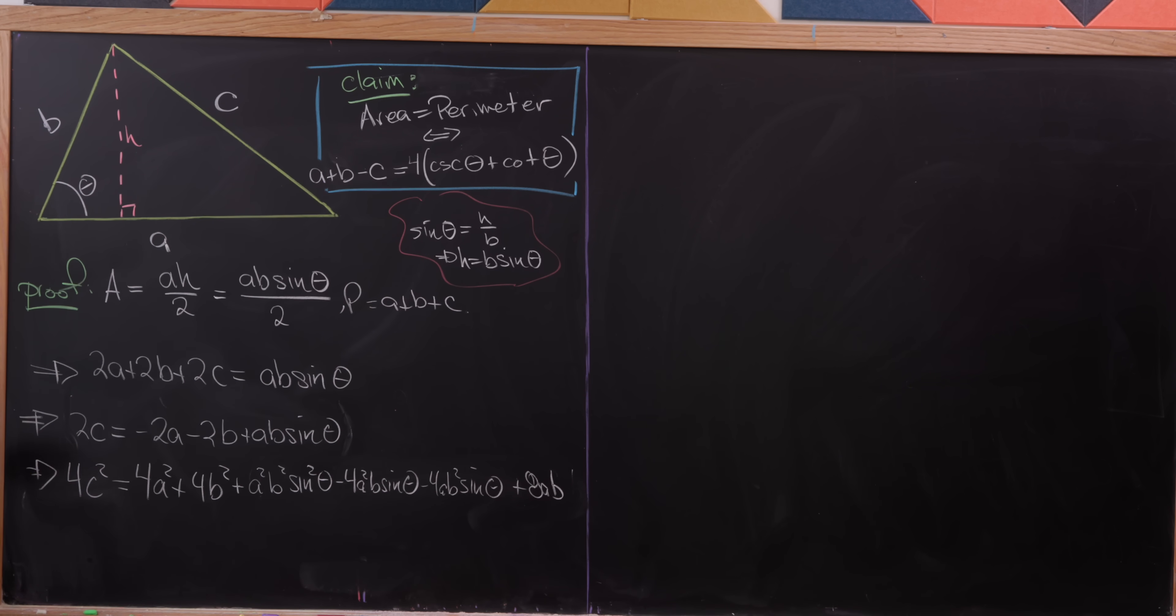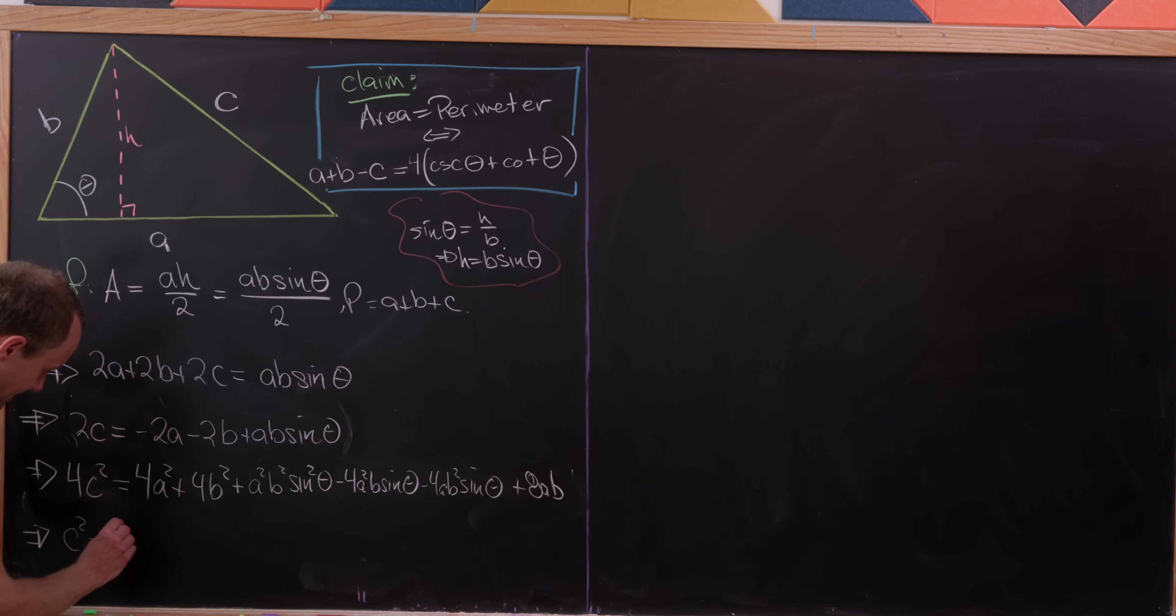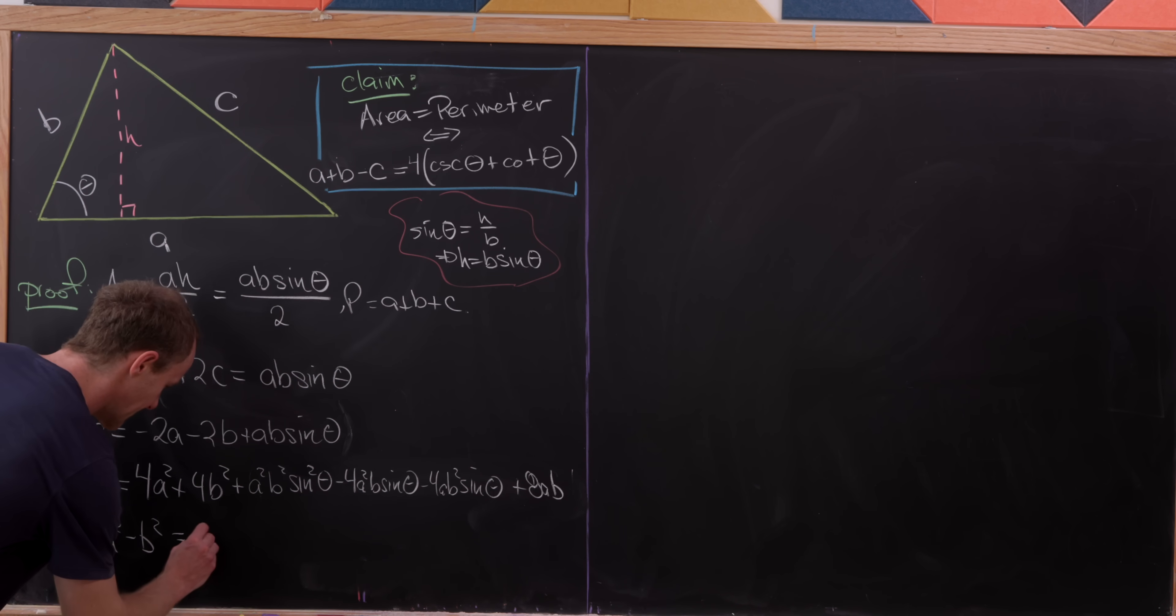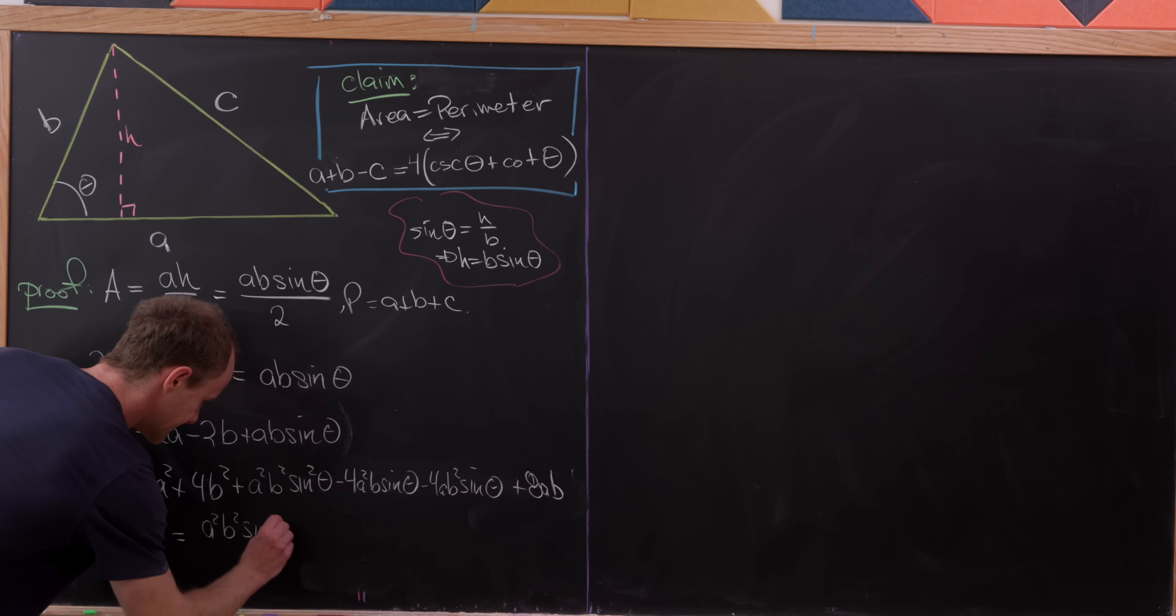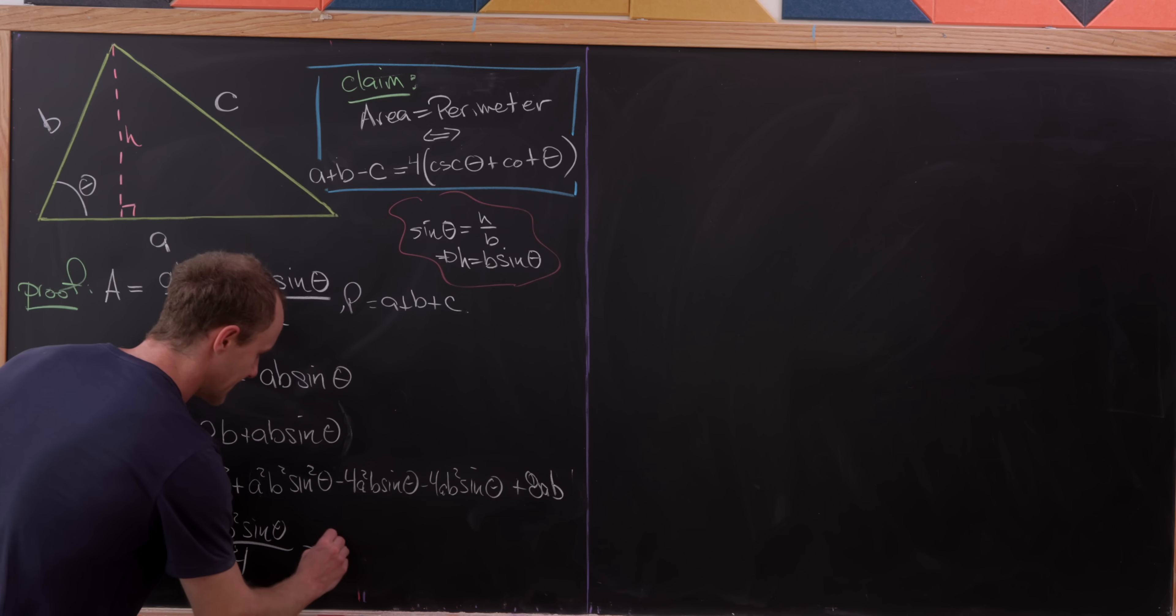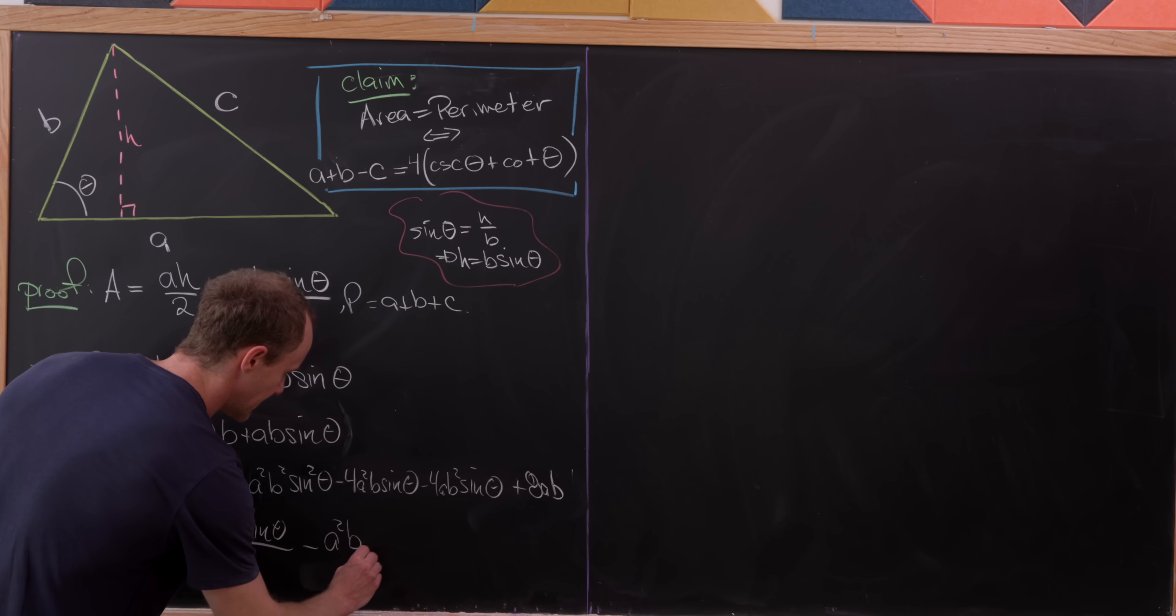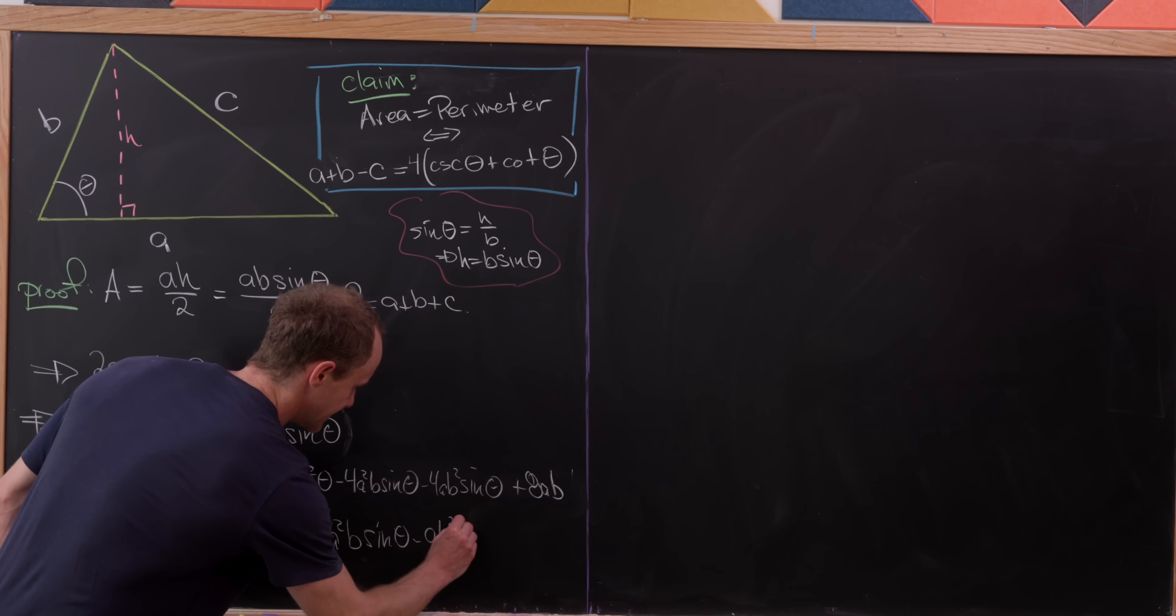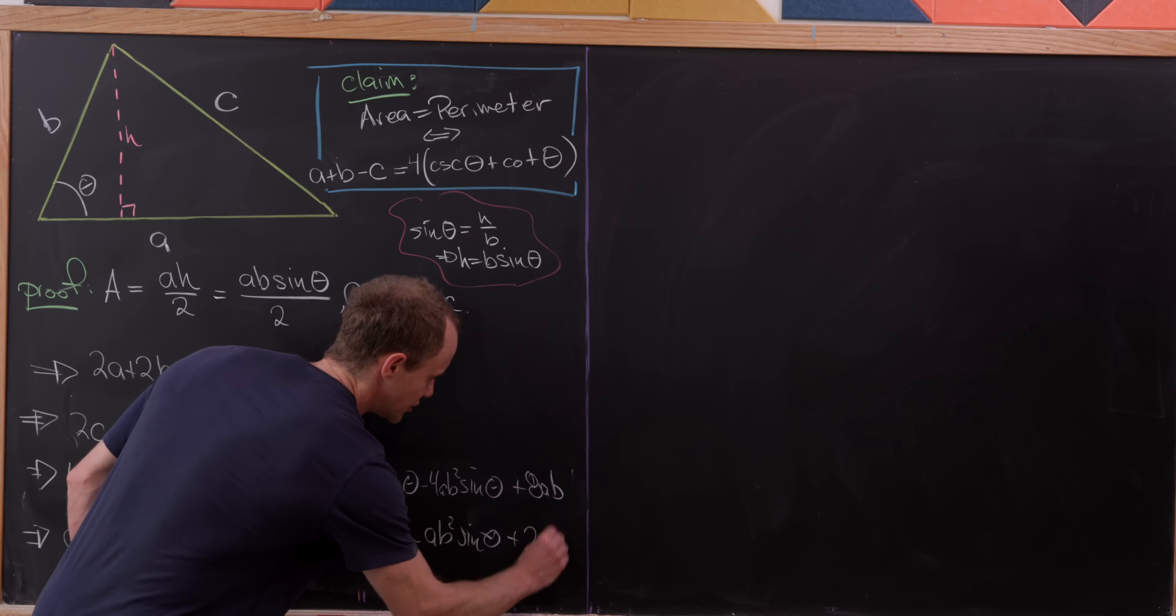Now I'm going to do two steps at once. I'm going to move this 4a squared b squared over to the left, and then I'm going to divide the whole thing by 4. So I'll have c squared minus a squared minus b squared is the same thing as a squared b squared sine theta over 4, and then minus a squared b sine theta minus ab squared sine theta, and then plus 2ab.